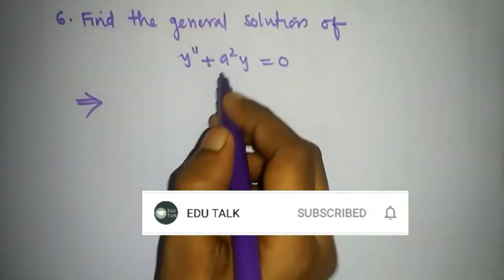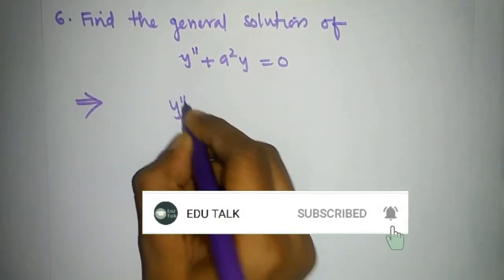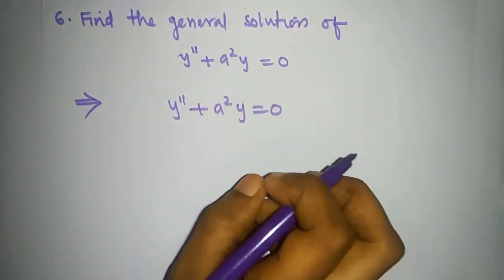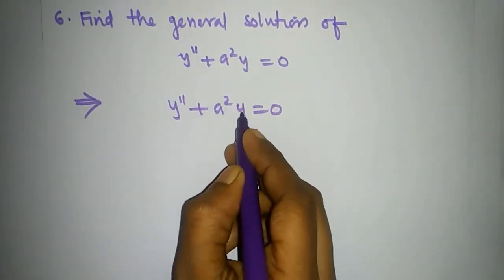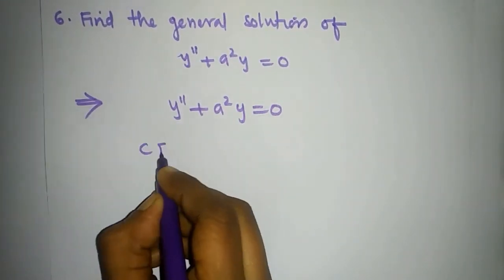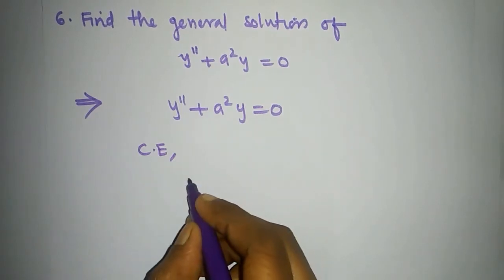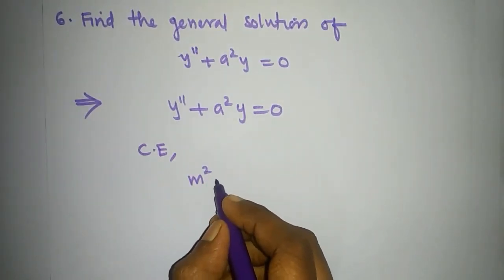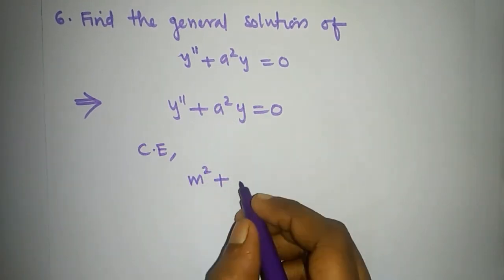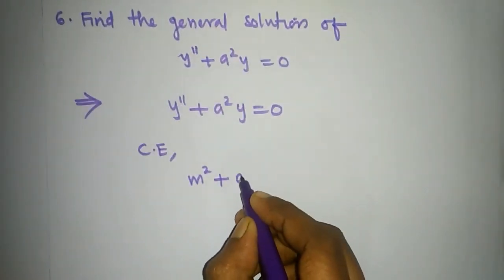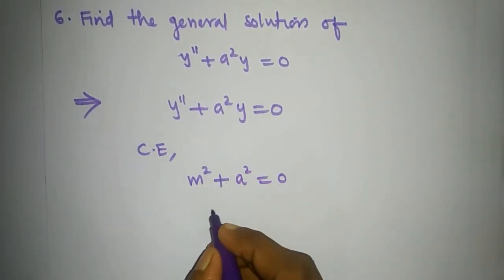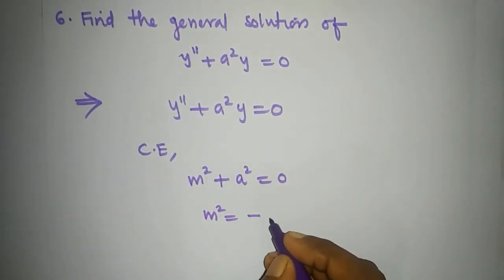Find the general solution of y'' plus a squared·y equal to 0. The characteristic equation is m squared plus a squared equal to 0.